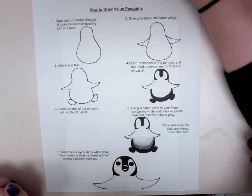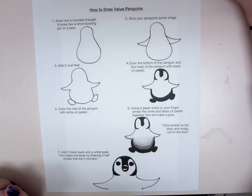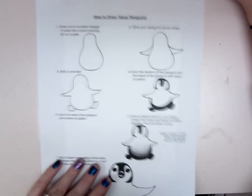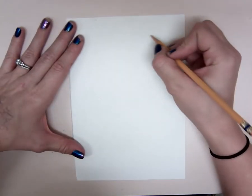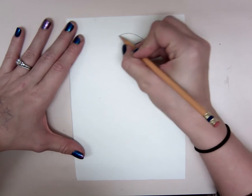So today we are going to draw our penguin using pencil and black and white oil pastel. You're going to start with a small piece of paper and using the steps provided you are going to start by drawing a rounded triangle.